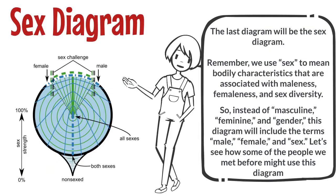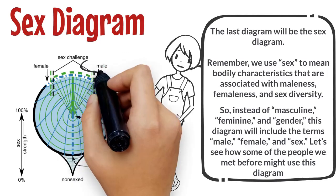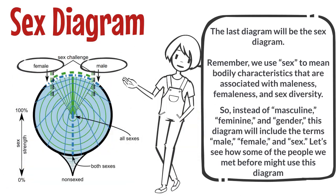The last diagram will be the sex diagram. We use sex to mean bodily characteristics that are associated with maleness, femaleness, and sex diversity. So instead of masculine, feminine, and gender, this diagram will include the terms male, female, and sex.